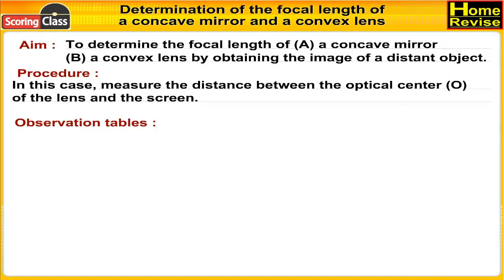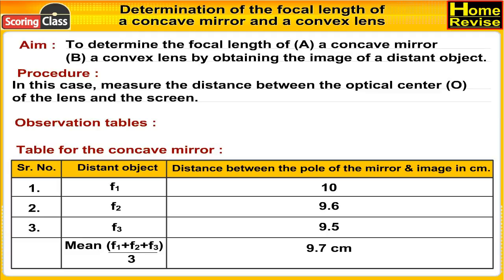Observation table: Table for the concave mirror. The columns are serial number, distant object, distance between the pole of the mirror and image in centimeters, and mean distance.